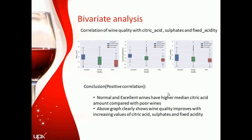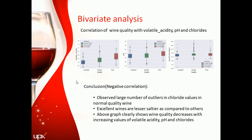In bivariate analysis, let's analyze the correlation between factors with respect to quality. For positively correlated factors — citric acid, sulfate, and fixed acidity — normal and excellent wines have higher median citric acid amounts compared with poor wines. The graph clearly shows wine quality improves with increasing values of citric acid, sulfate, and fixed acidity. For negatively correlated factors — volatile acidity, pH, and chlorides — volatile acidity clearly decreases the quality of wine. There are large numbers of outliers in chloride values for normal quality wine, and excellent wines are less salty compared to others.